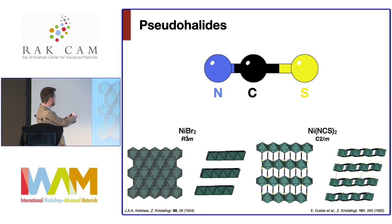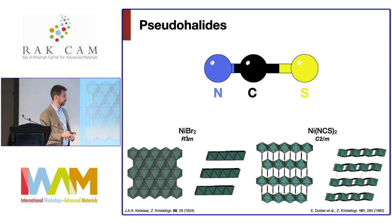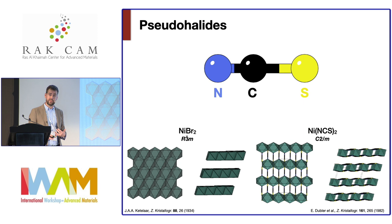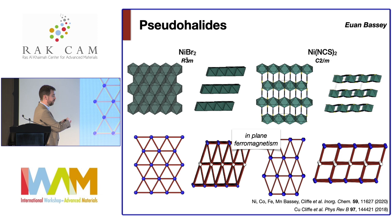You can see the comparison between the two structures: octahedral layers, edge-sharing, stacking in two dimensions — the same as nickel bromide, except now the symmetry is broken because you've got a rod rather than a ball, stretching it along a single dimension. As well as structural similarity, there's also a magnetic similarity. Nickel bromide and the other nickel halides have a potential single-layer ferromagnetism — they're bulk antiferromagnets but within each layer spins point in the same direction — and the same is true for nickel thiocyanate.